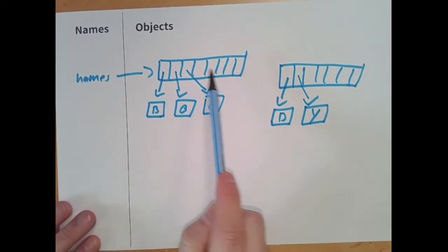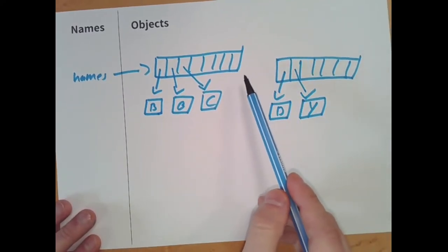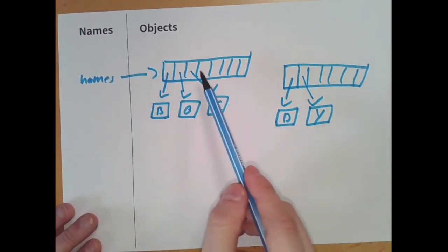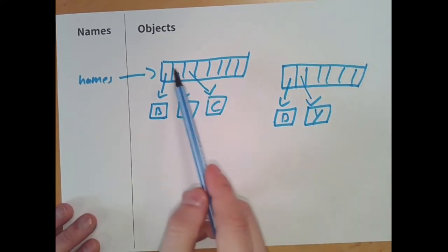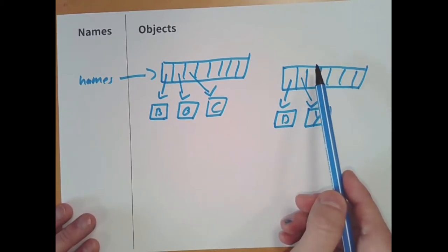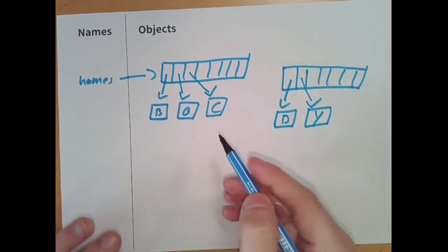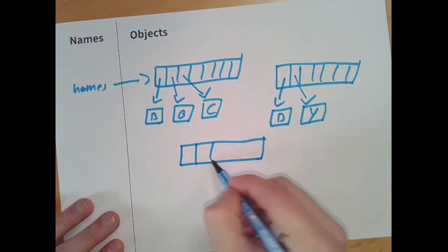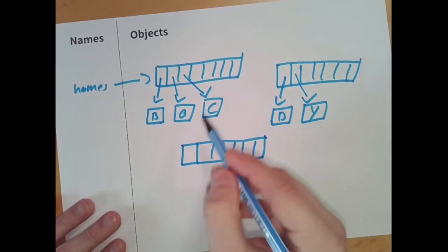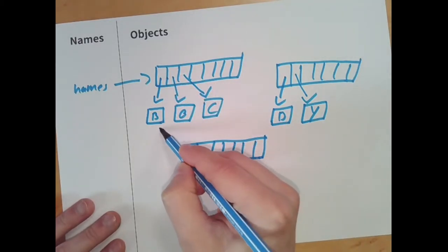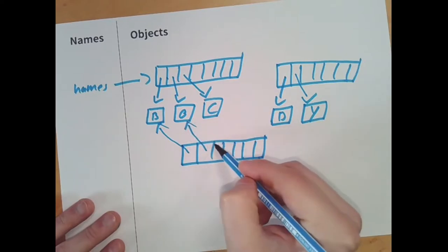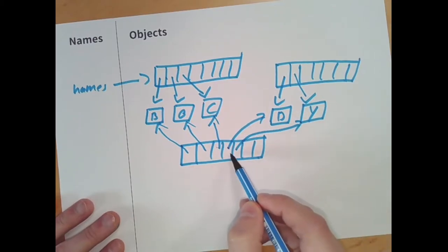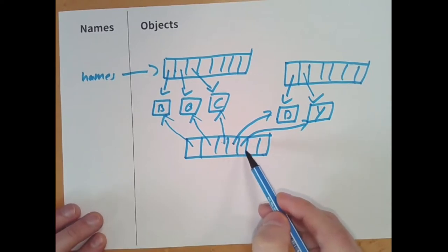The addition operator asks the left-hand operand, 'can you add yourself to this one here?' The list object says, 'this is also a list, I know how to do that.' They go ahead and create a third list object. The first element will be the first element from the left operand, so we get a reference to B, then O, then C. The same holds for D and Y — references four and five. This new list object is basically the return value given back to us.